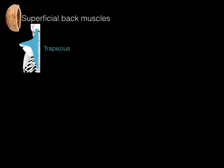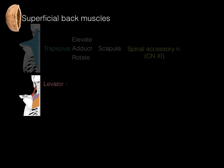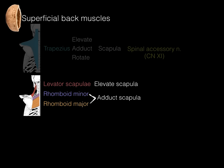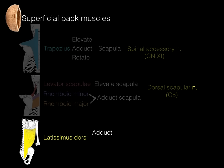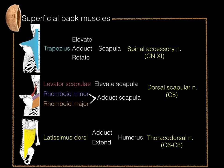Superficial back muscles in a nutshell: the trapezius elevates, adducts, and rotates the scapula, innervated by the spinal accessory nerve (cranial nerve 11). The levator scapulae elevates the scapula, while the rhomboid minor and major together adduct the scapula — all three innervated by the dorsal scapular nerve from the C5 spinal cord level. Finally, the latissimus dorsi adducts and extends the humerus, innervated by the thoracodorsal nerve from C6, C7, and C8 spinal cord levels.